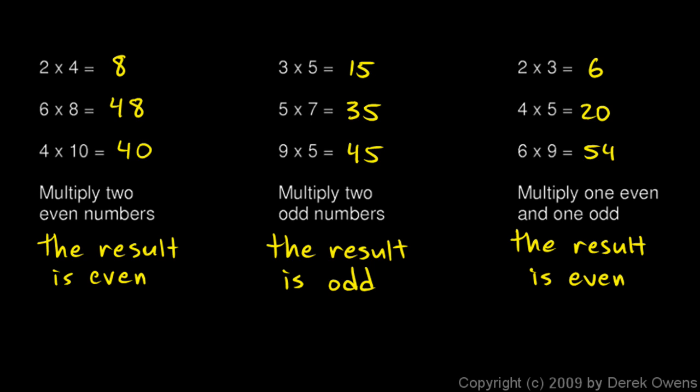So we have three little rules we could memorize for addition and three little rules we could memorize for multiplication. But again, rather than memorizing the rules, it's probably easier to remember one simple fact: these patterns always hold, they're always the case. And if you know your basic addition and multiplication, you can figure out these rules whenever you need to.